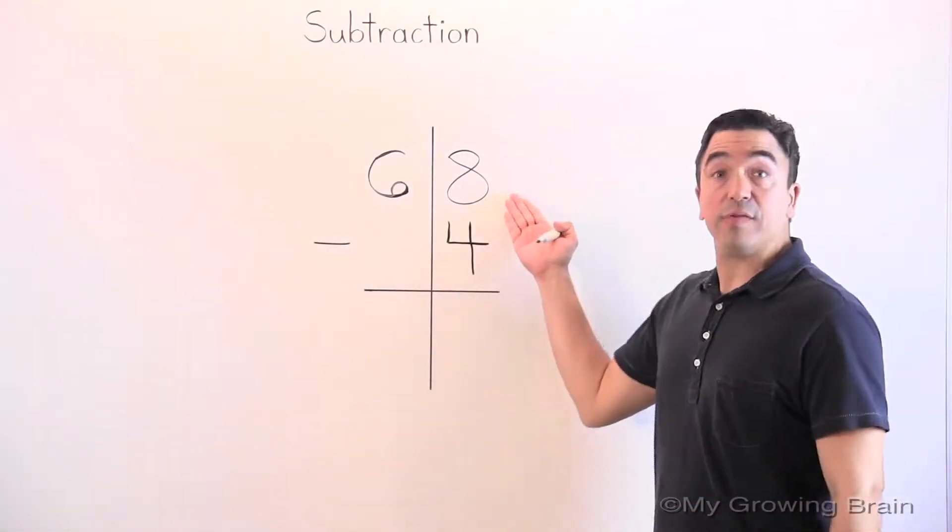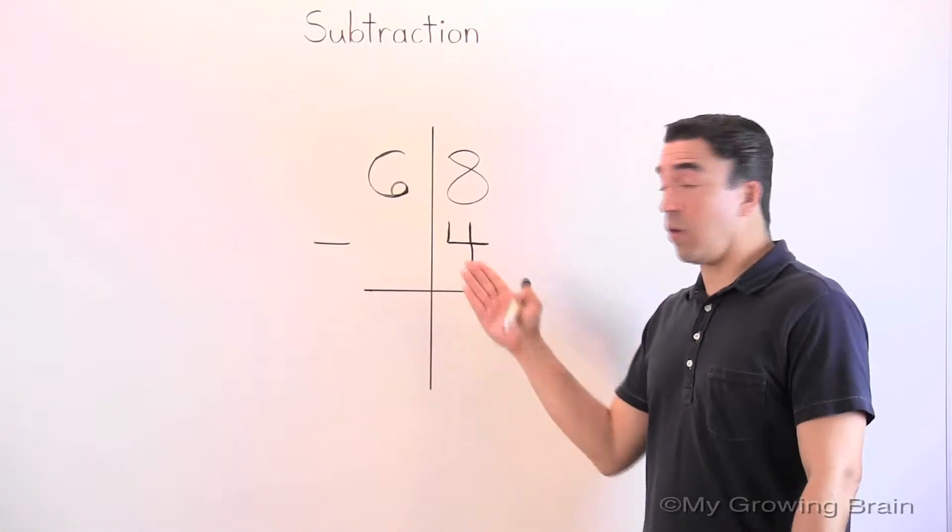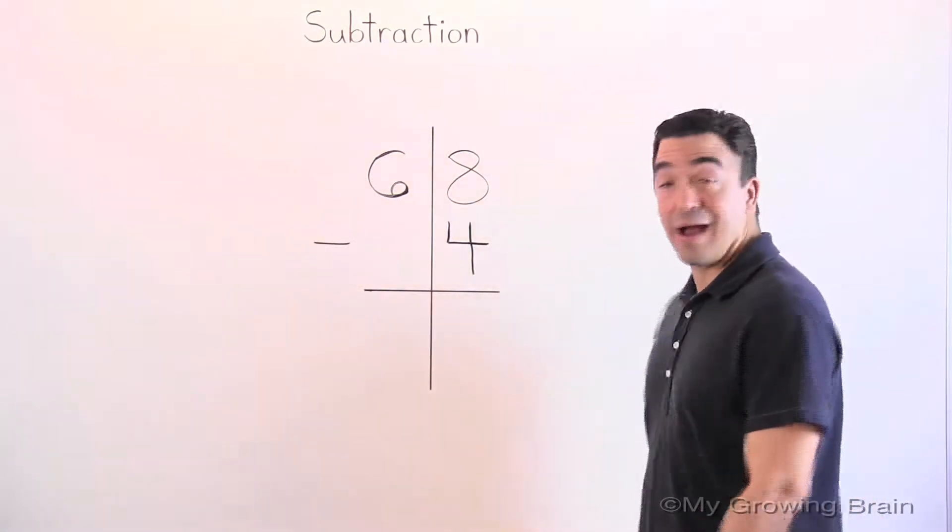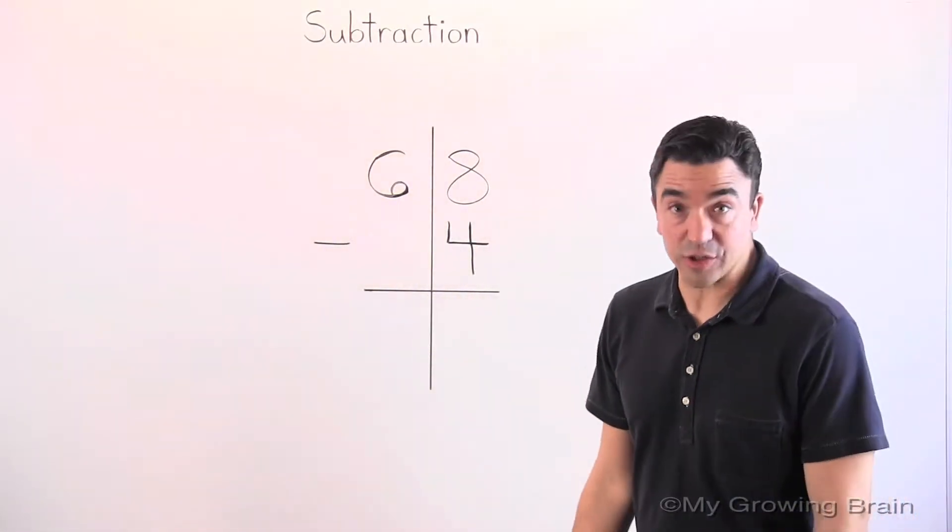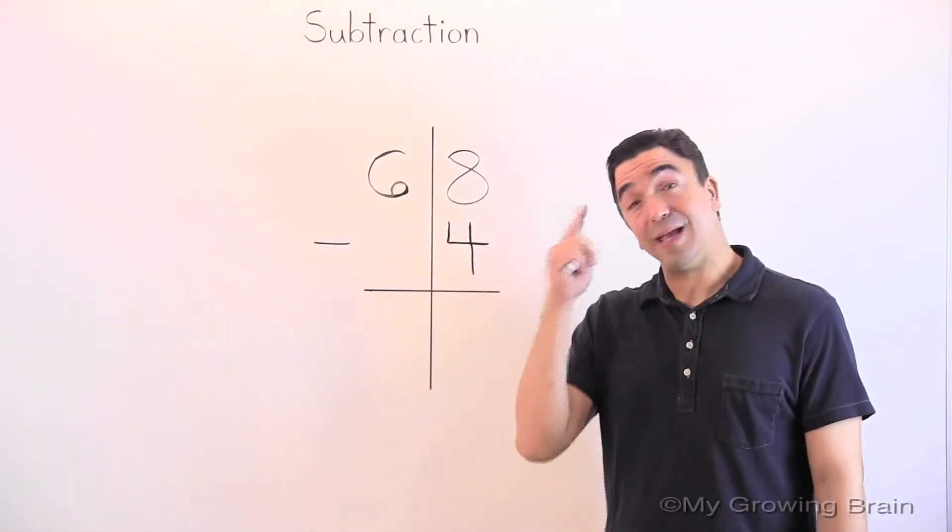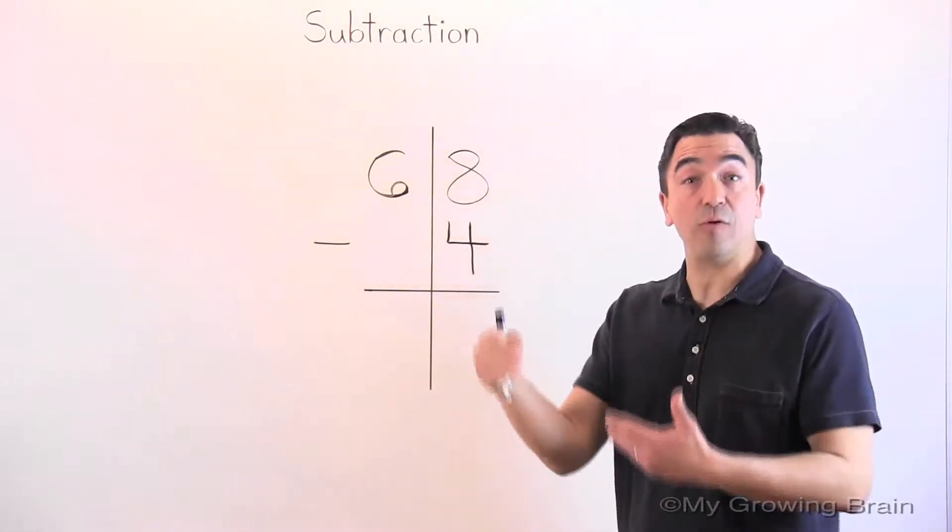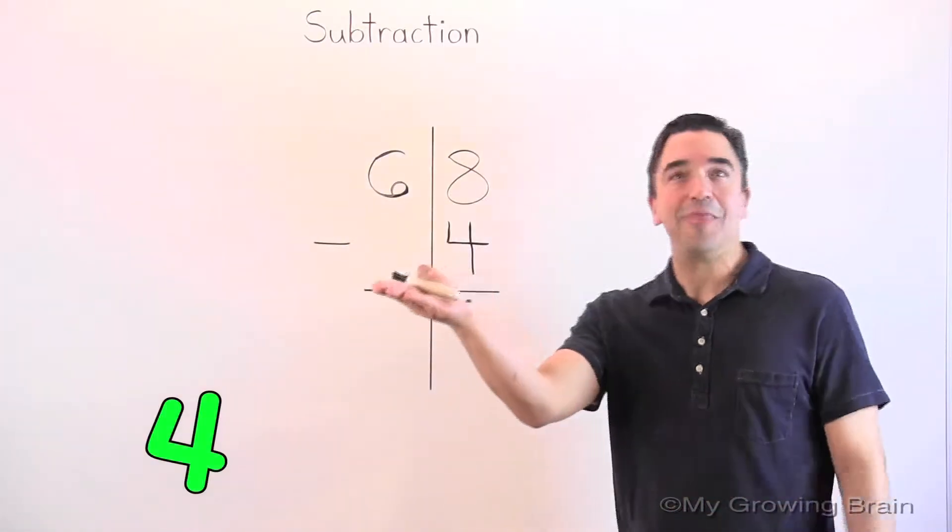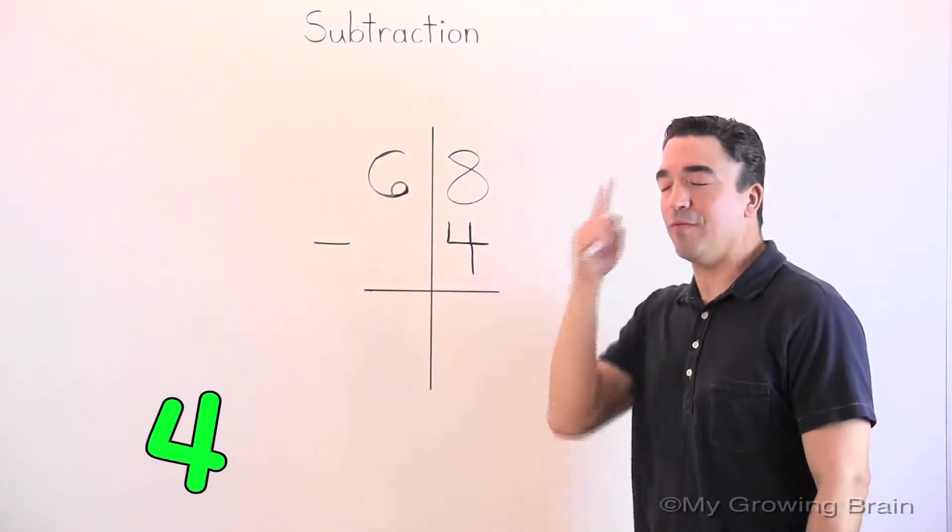Alright, here we go. 8 minus 4. I like to use the counting on strategy here. I'm going to put the smaller number, 4, in my head, and count on to 8. There's my 4. 4 in my head.